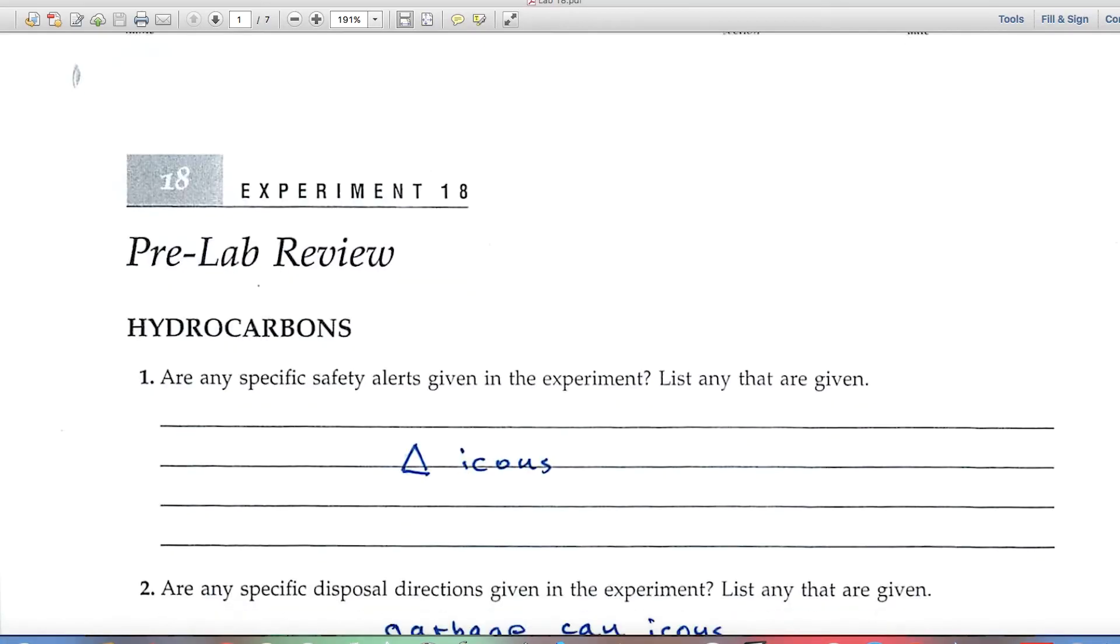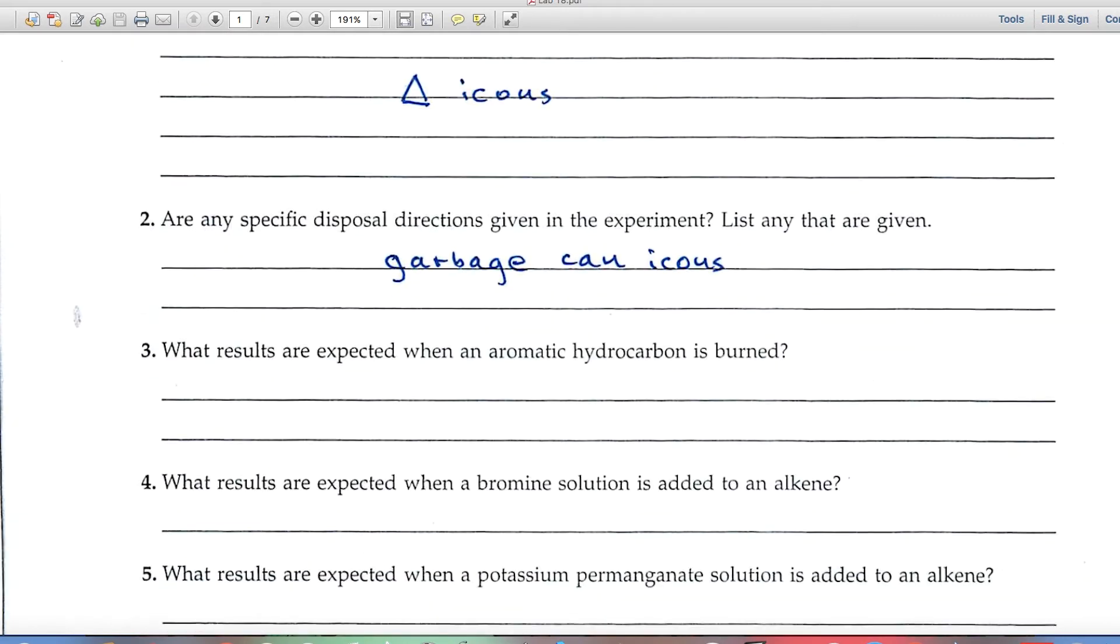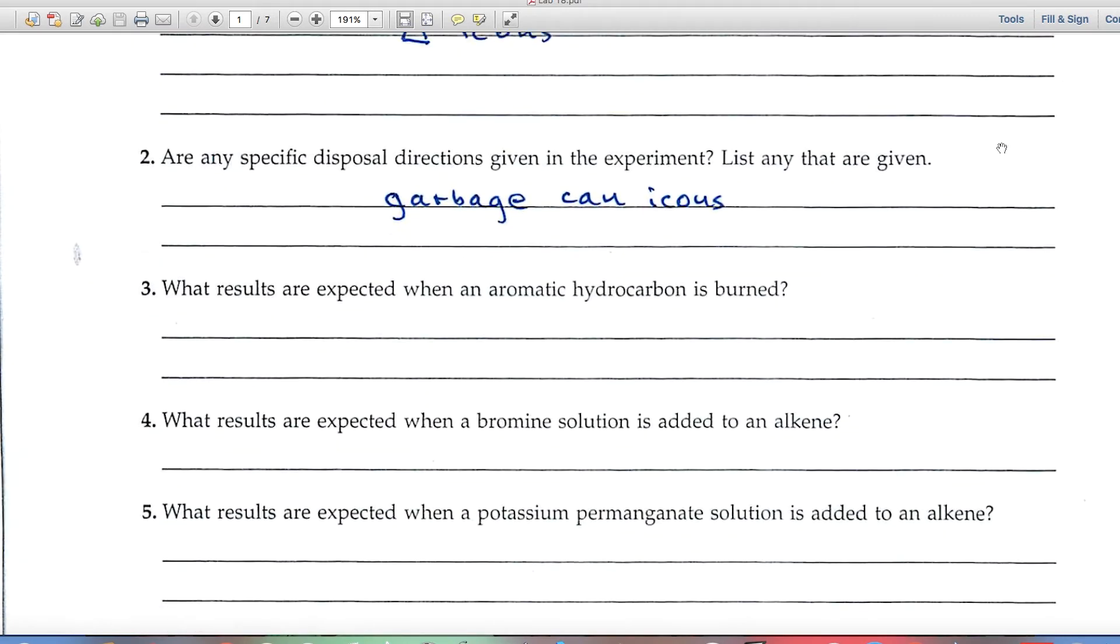Let's have a look at the pre-lab review sheets. There are a number of questions here. The first one, any specific safety alerts, as you read the experiment, look for those triangle icons. That'll guide you to answering that question. Number two, any specific disposal directions, look for the garbage can icons, and that'll help you.